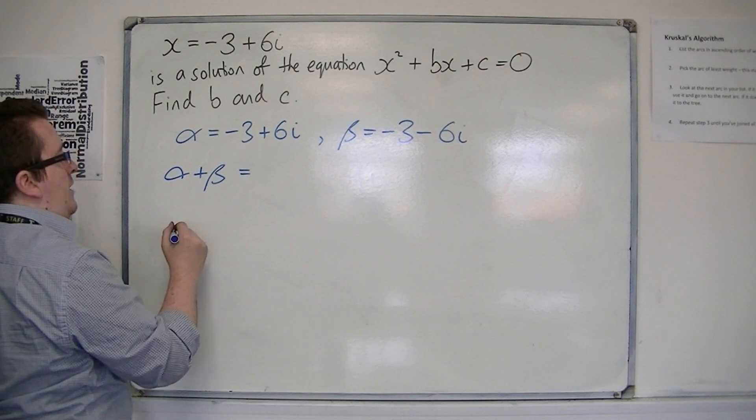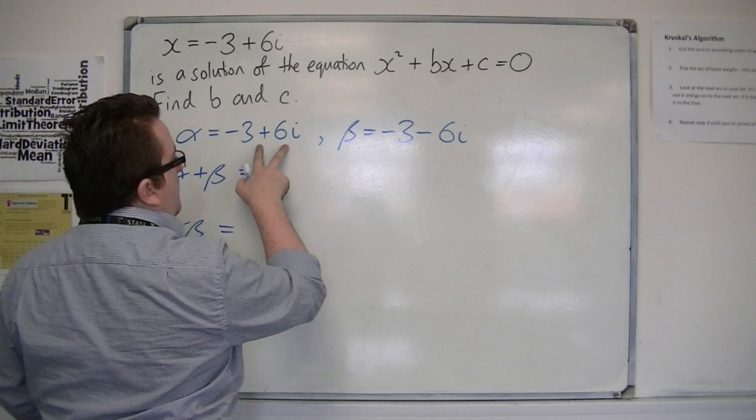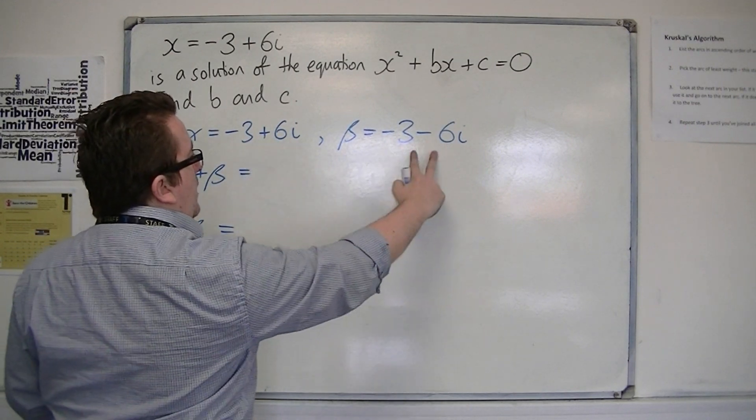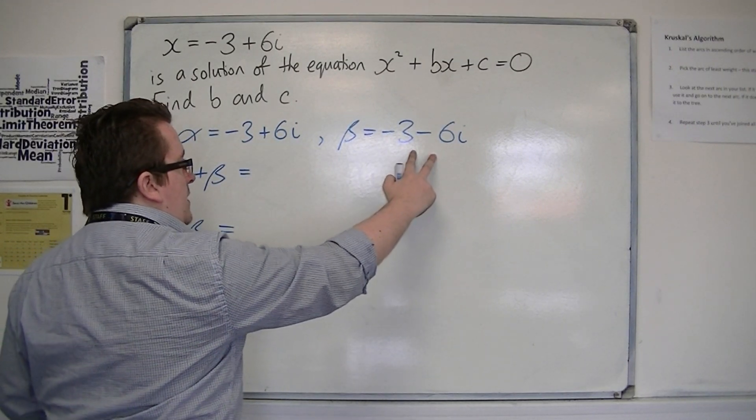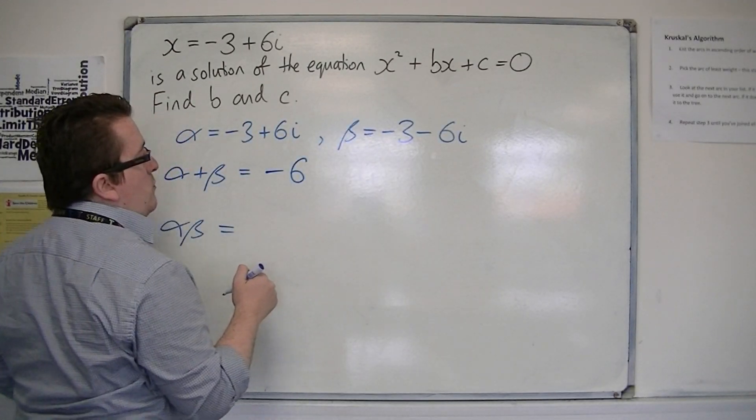Alpha plus beta is minus 3 plus 6i plus minus 3 minus 6i. That's just minus 6 because the two 6i's cancel each other out.